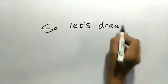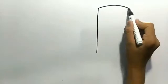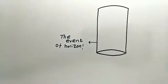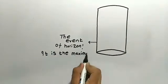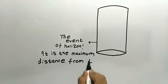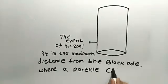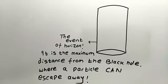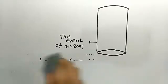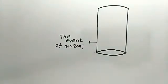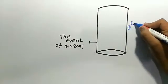So let's draw a black hole to understand it. A black hole is not yet proved to have its shape, but we draw it as a cylindrical spherical shape. The boundary is called the event horizon and it is the maximum distance from the black hole from which a particle can escape. If we go beyond the event horizon towards the black hole, the particle will be unable to escape.